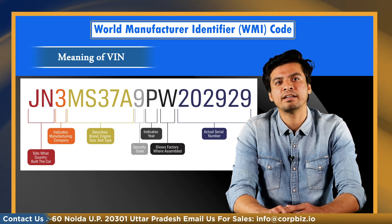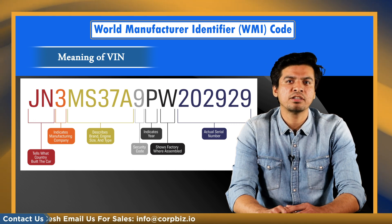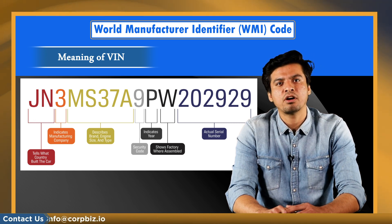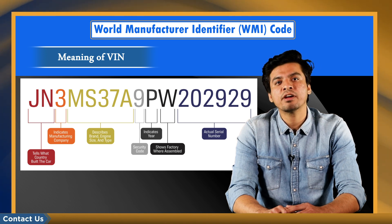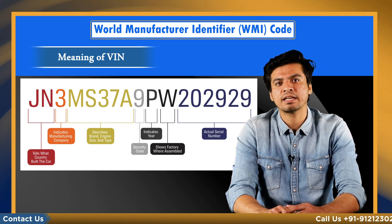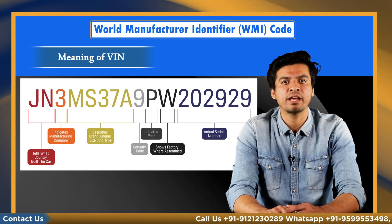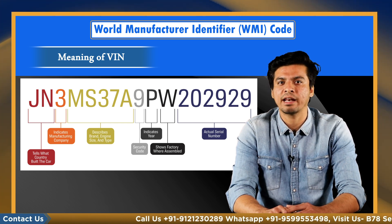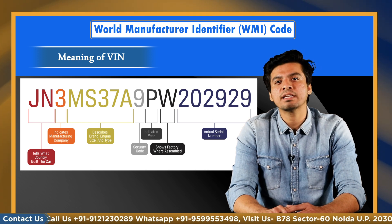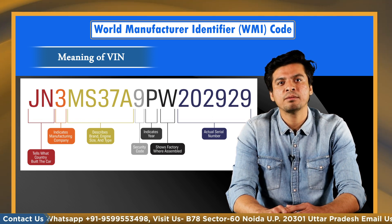Second is the Vehicle Descriptor Section. It provides details describing the general attributes of the vehicle and consists of six characters. If the manufacturer doesn't use one or more of these character spaces, the unused spaces shall be filled by numeric or alphabetical characters of the manufacturer's choice. The sequence and coding in the VDS section is determined by the manufacturer.